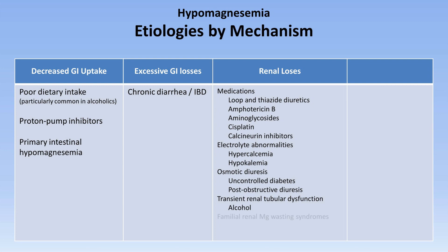Finally, there are a handful of rare familial renal magnesium wasting syndromes. The most widely known is Gitelman syndrome, an autosomal recessive disease caused by a defect in the thiazide-sensitive sodium chloride cotransporter in the distal tubule, which also results in hypokalemia and a metabolic alkalosis from secondary hyperaldosteronism. There are also a number of highly rare genetic defects affecting the Claudin-16 protein, which lead to a syndrome of hypomagnesemia, hypercalciuria, and nephrolithiasis.